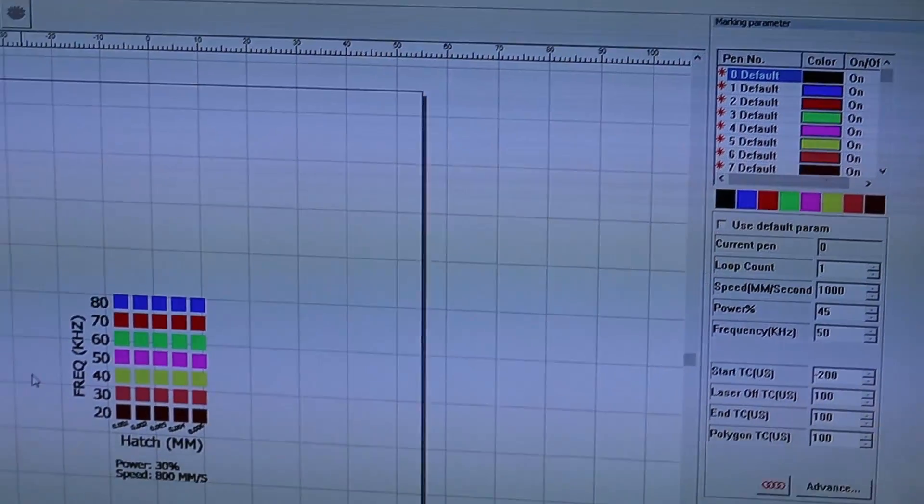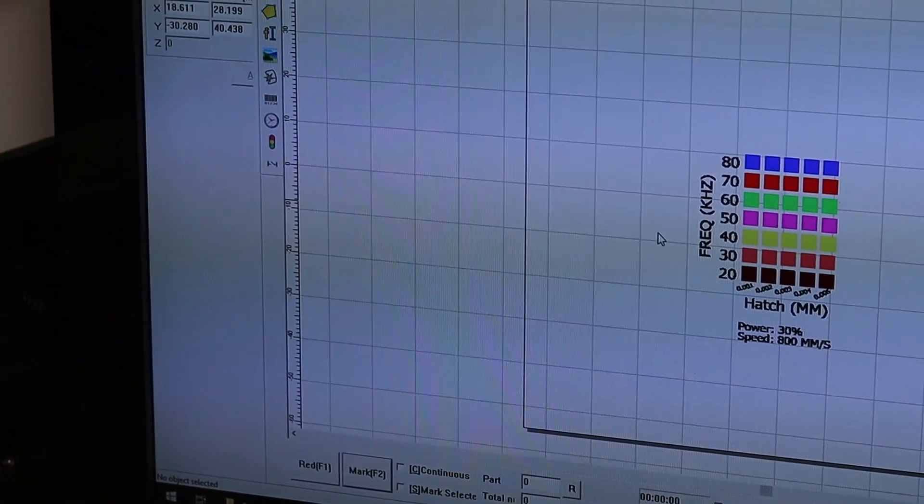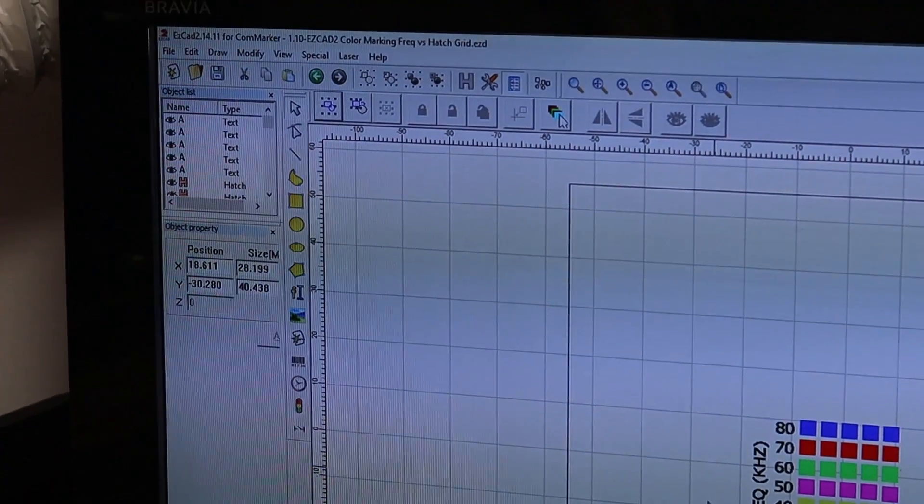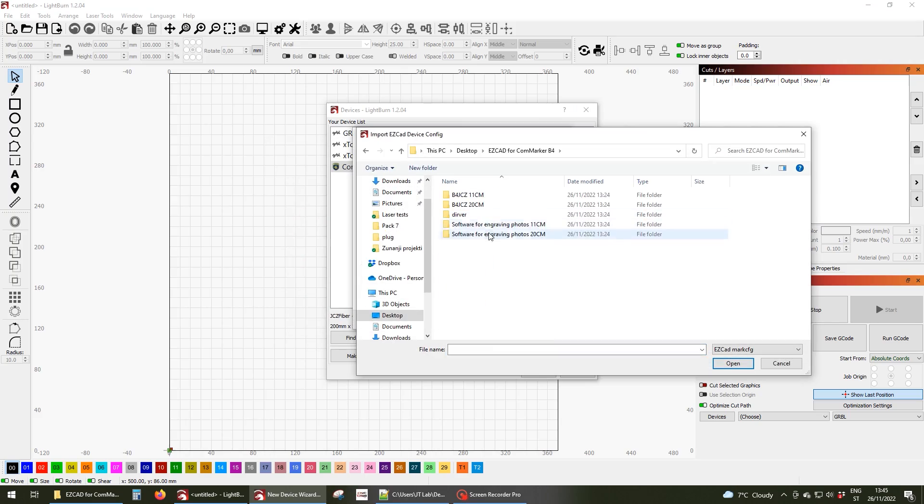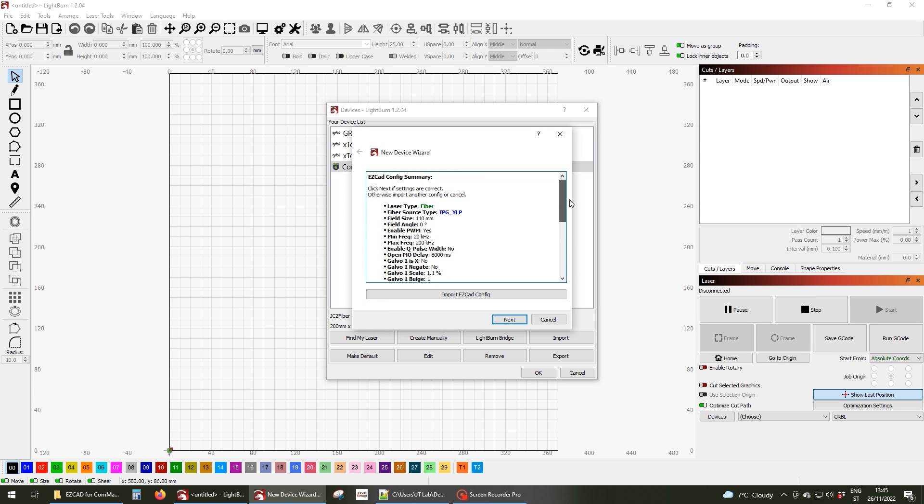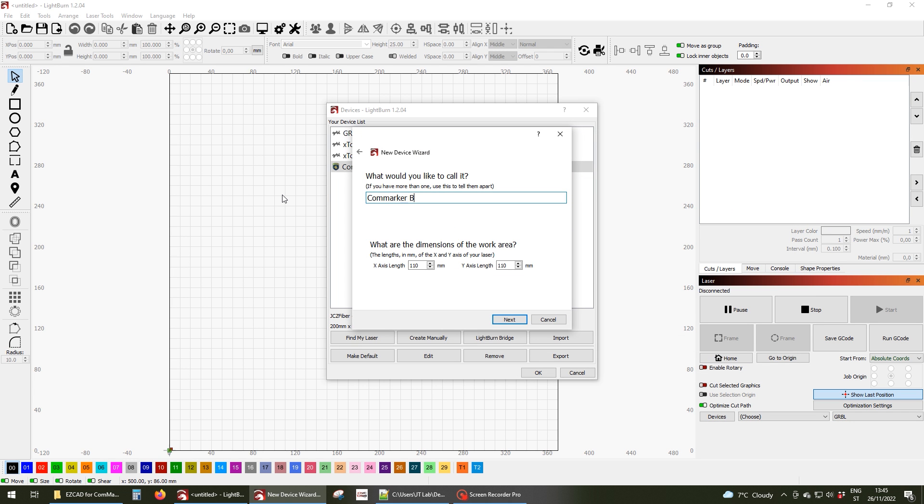The Comm Marker B4 can be controlled with the EasyCAD2 software which is the standard for most fiber lasers, but this one can also be controlled with Lightburn which has recently started supporting fiber lasers too. I used both in this video, but I mostly used Lightburn which I am more used to.